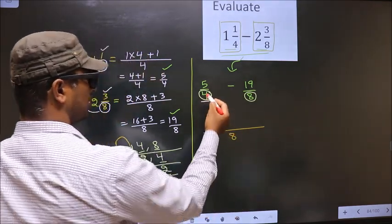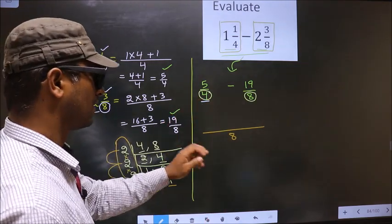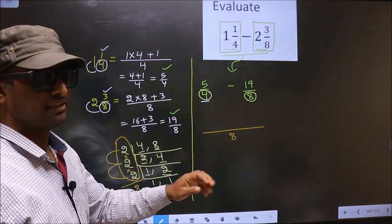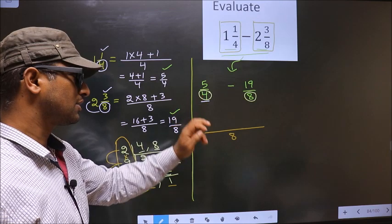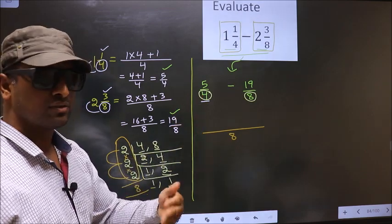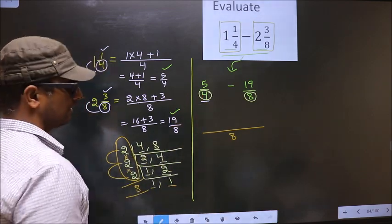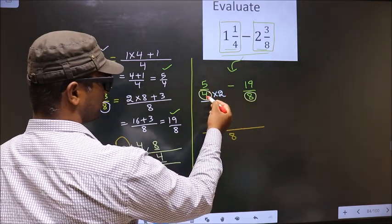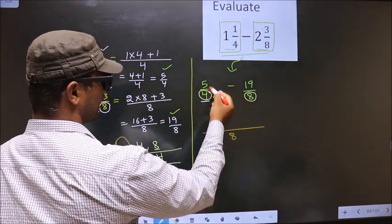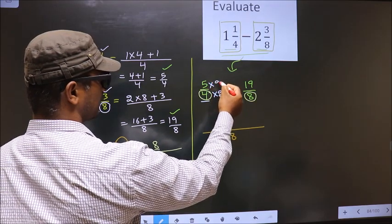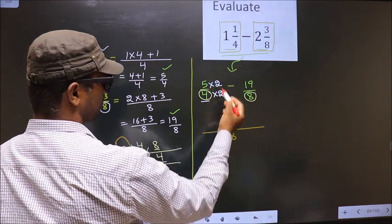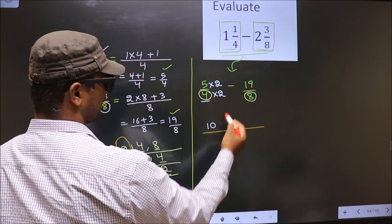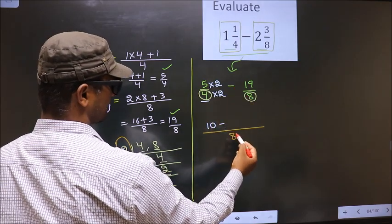Next. Here the denominator is 4. Here we have 8. Now, 4 should change to 8. For that to happen, we should multiply here by 2. Whatever number you are multiplying to the denominator, numerator also you should multiply by the same number. So, 5 into 2 we get 10. Minus symbol as it is.